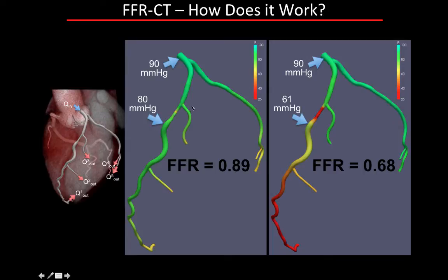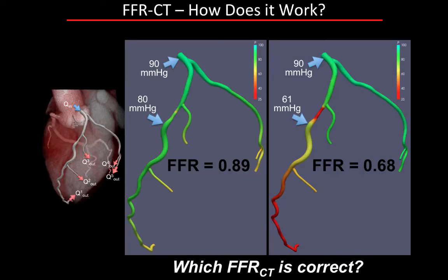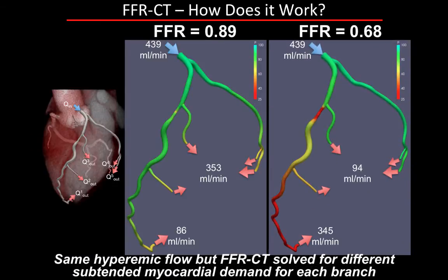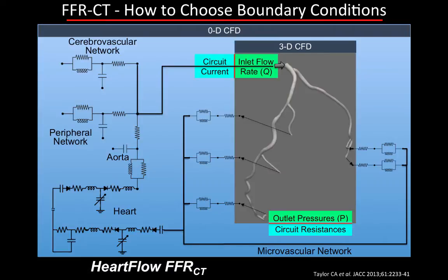Depending on the conditions you give the computer, it will produce different pressures and therefore a different FFR. For example, for one lesion, one simulation might produce an FFR of 0.89—not significant—while another might produce an FFR of 0.68, which is significant given the 0.8 clinical cutoff. These two simulations both assumed a hyperemic flow of 439 mL/min, but the first assumed the LAD territory required only 86 mL/min, whereas the other assumed 345 mL/min, giving different FFR results.